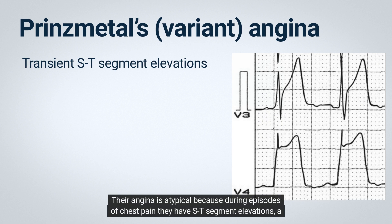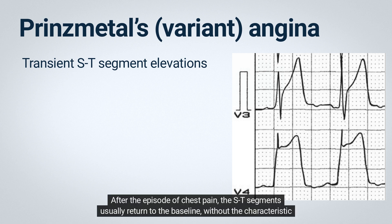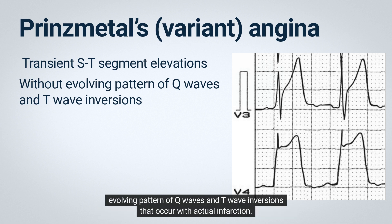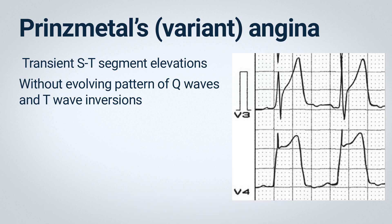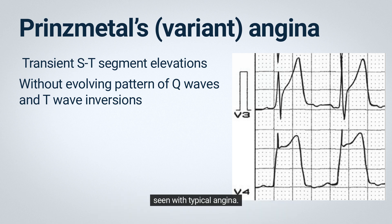In Prinzmetal's angina, the ST segment elevations are transient. After the episode of chest pain, the ST segments usually return to the baseline without the characteristic evolving pattern of Q waves and T wave inversions that occur with actual infarction. Thus Prinzmetal's angina is atypical because the ECG shows ST elevations rather than the ST depressions seen with typical angina.